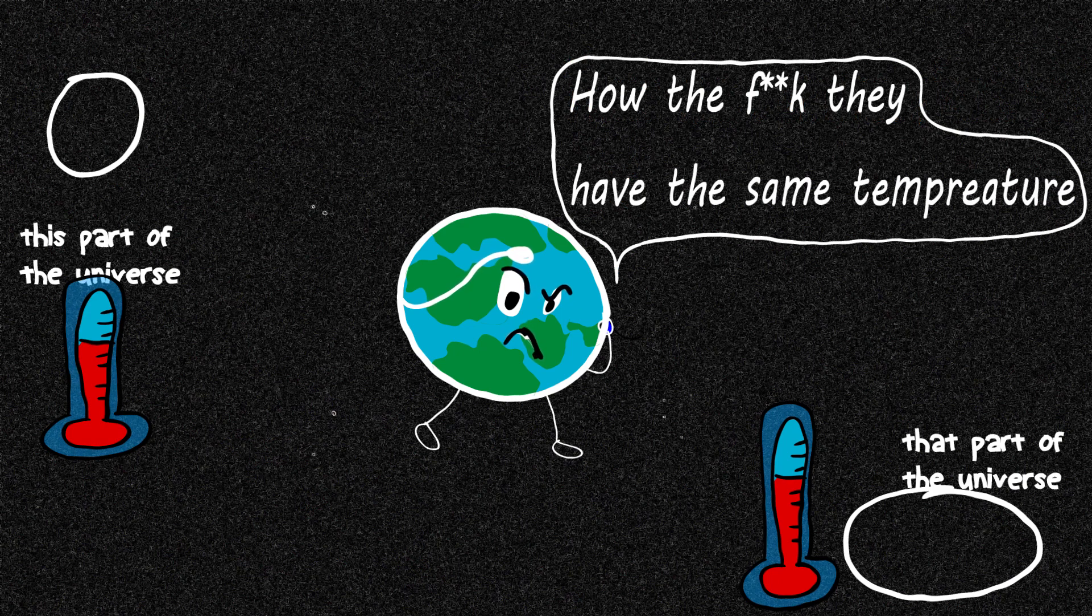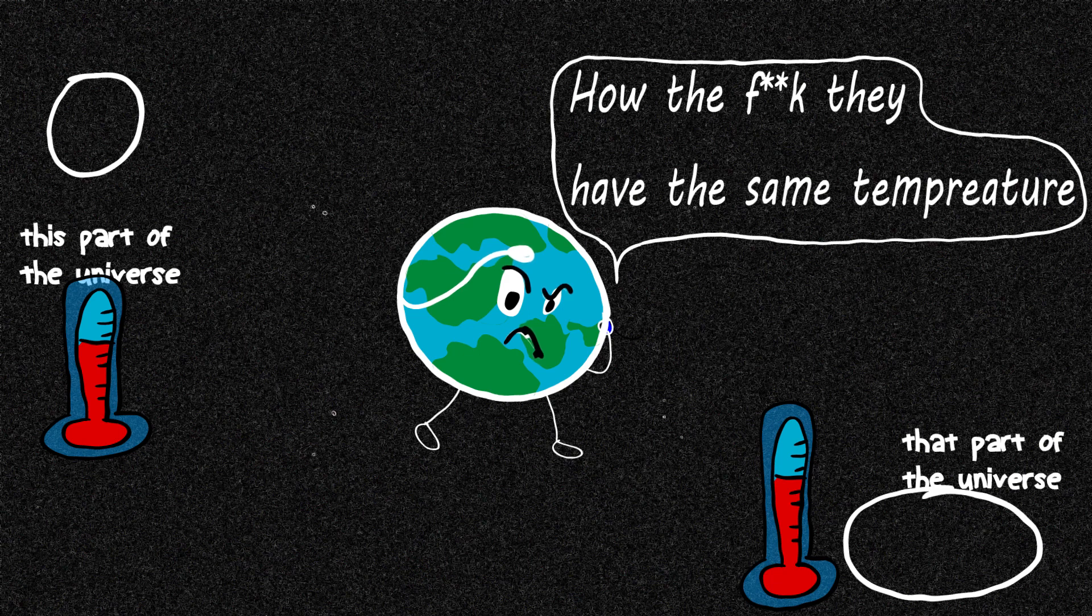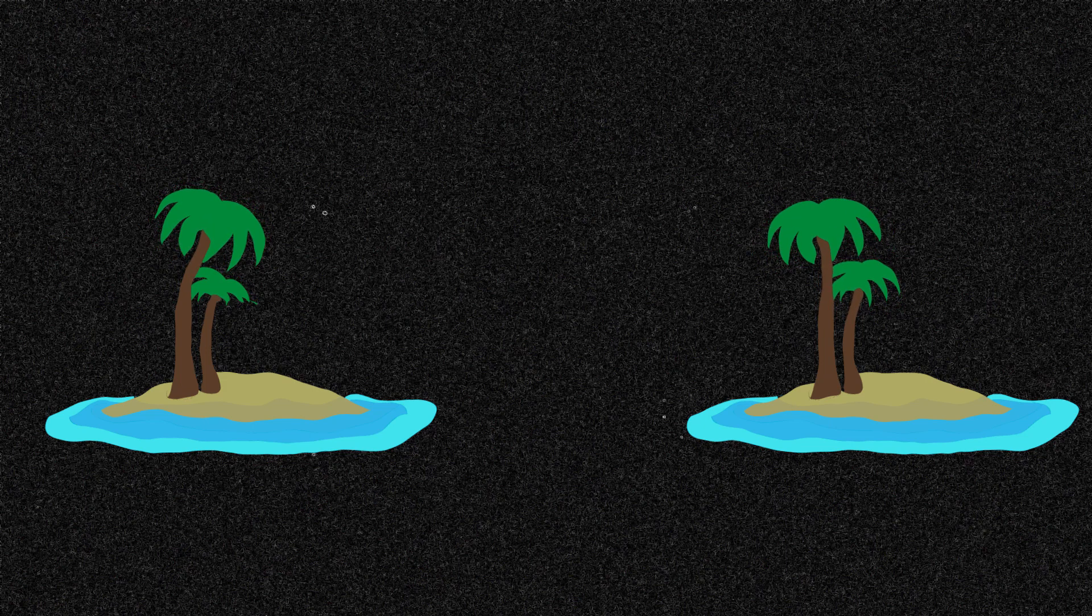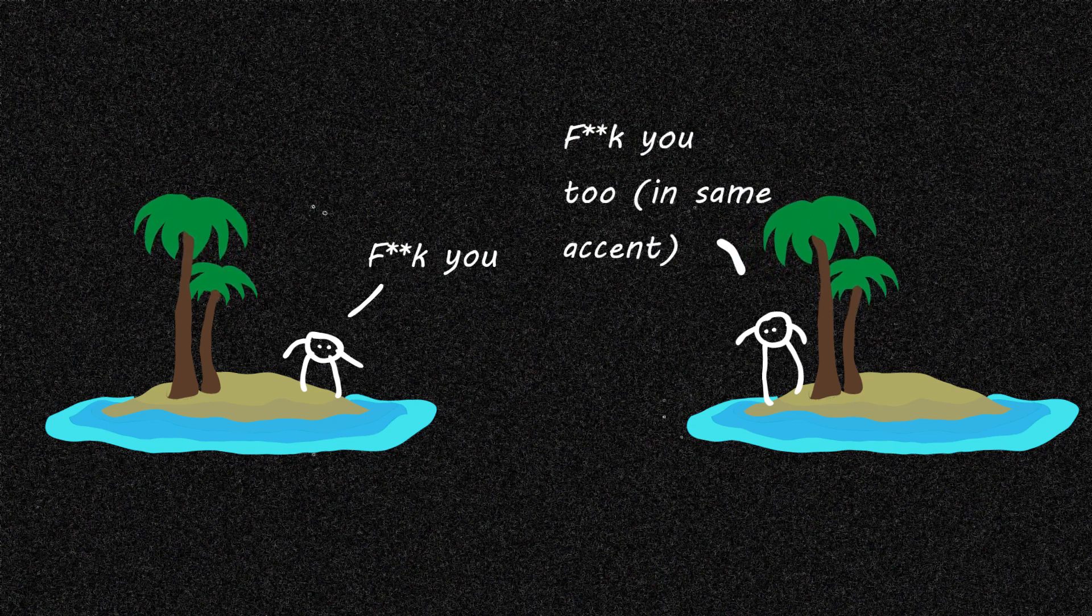But then how come they know that they have to have the same temperature? Not just this part—everywhere the universe seems to have the same temperature. But how could they arrange themselves that way if they haven't ever met? And that is a very big mystery. It's like having discovered two remote islands in very different parts of the world. But if you go there and talk to the local people, they speak exactly the same language, and even with the same accent.